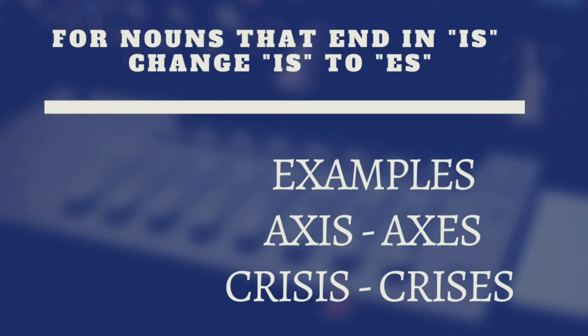For nouns ending in IS, we change IS to ES. For example, axis — A-X-I-S — becomes axes. Crisis — C-R-I-S-I-S — becomes crises — C-R-I-S-E-S.